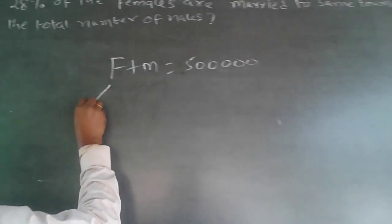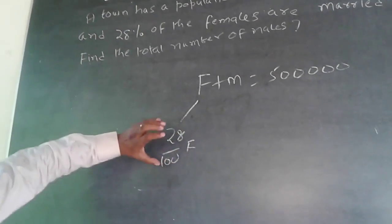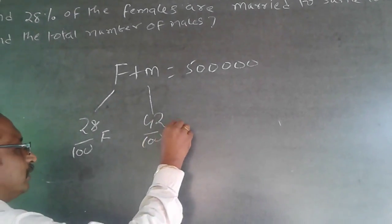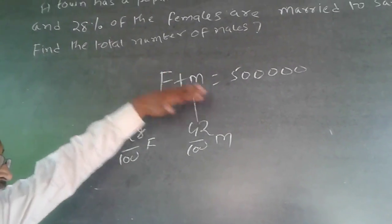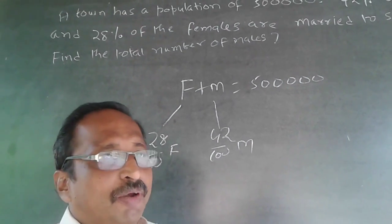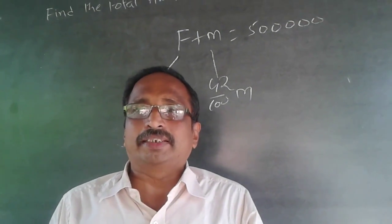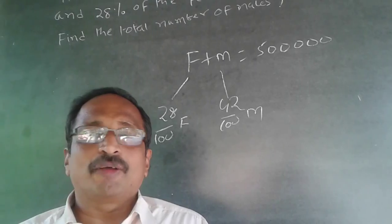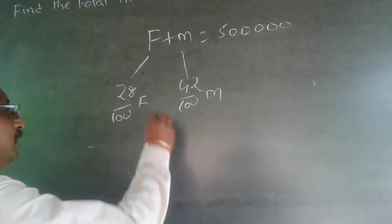Now, 28% of the females and 42% of the males — these are all purely numbers. The marriage is always one-to-one. If they are marrying in the same town, the number will have to be equal. So this 28% of the females and 42% of the males marrying in the same town means this number will have to be equal.